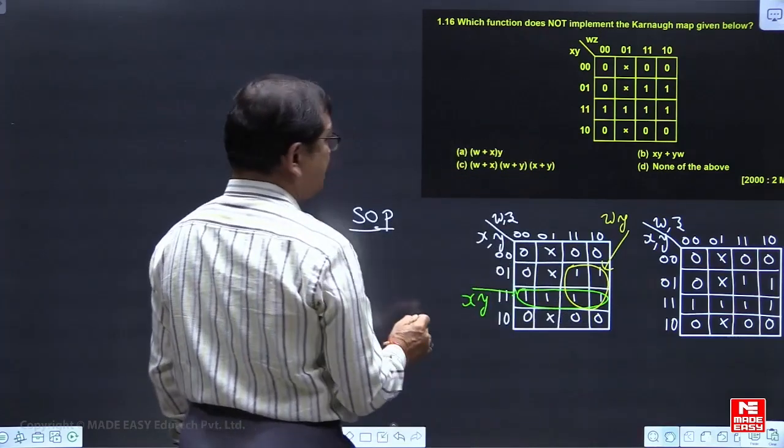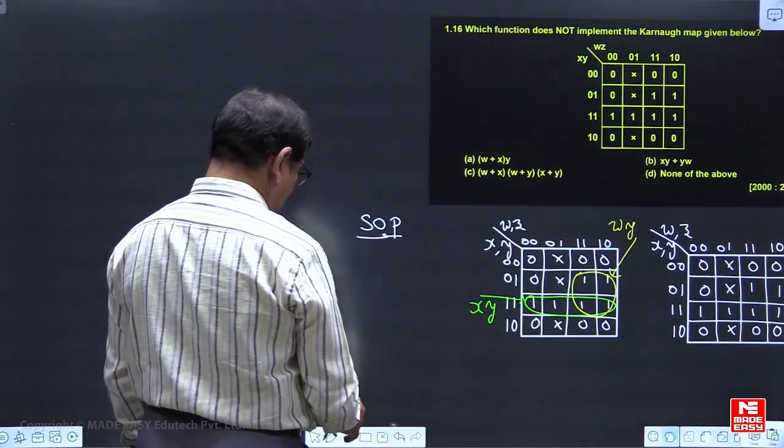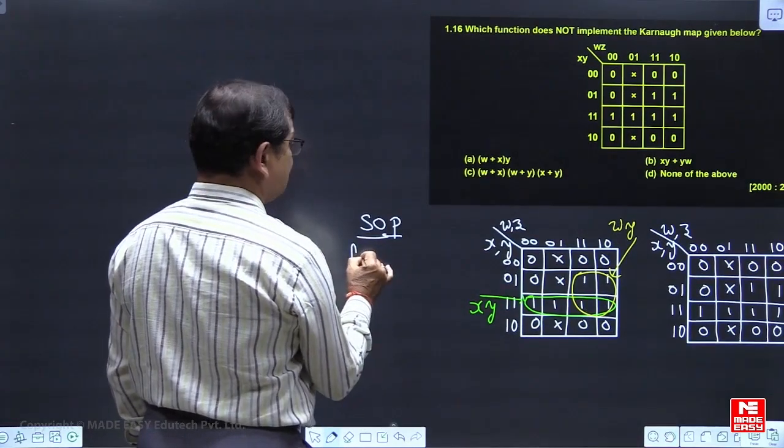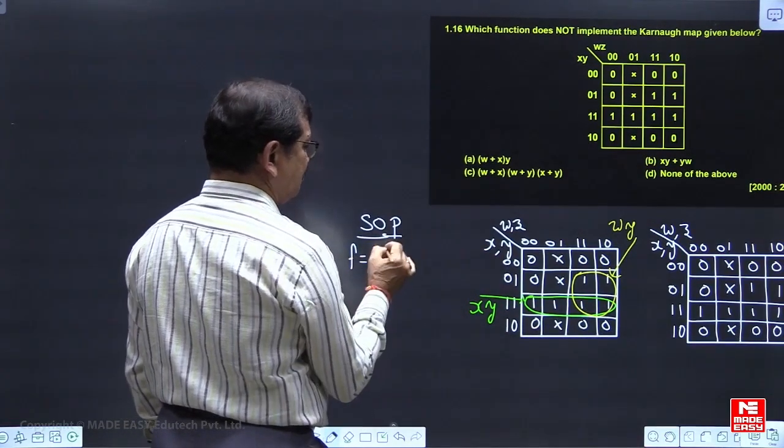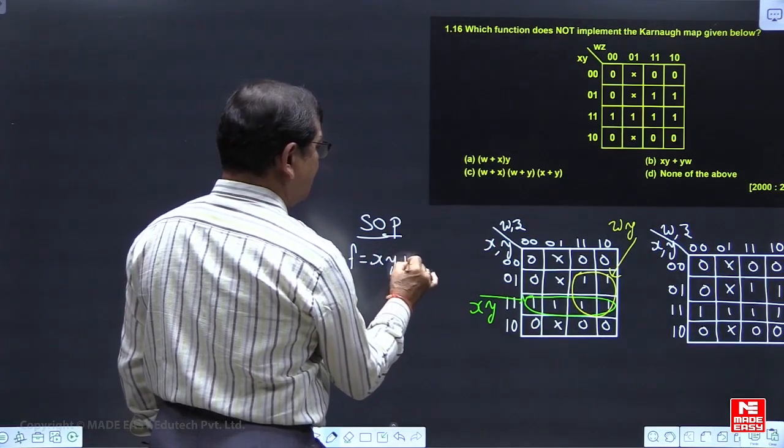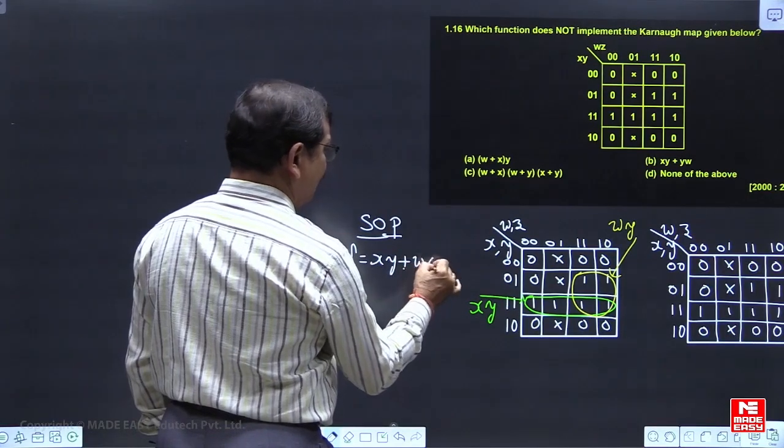Coming to this, W is not changing, Z is not available. So W, Y. So if you are taking SOP expression, we are looking to the SOP expression. We are having the function with SOP expression is XY OR with WY.